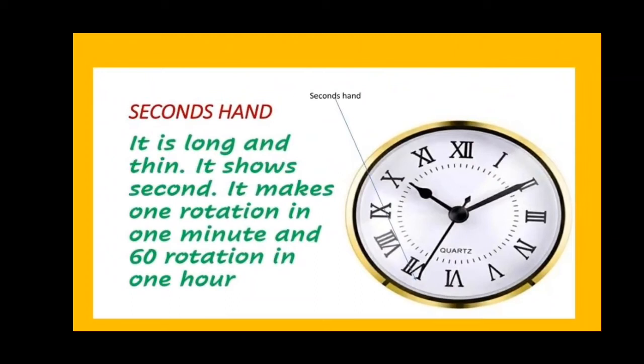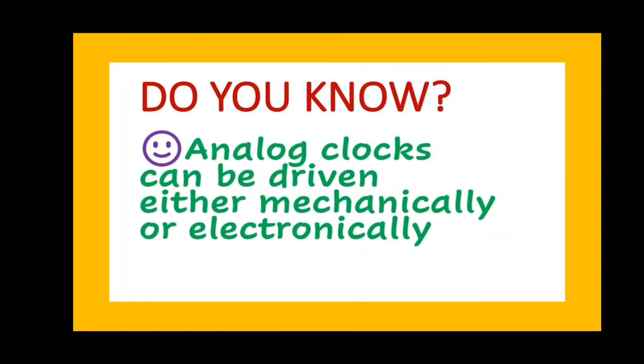Next, at last is the seconds hand. It is long and very thin and shows seconds. It makes one rotation in one minute and 60 rotations in one hour. Do you know children, analog clocks can be mechanical or electronic? That is, they can be driven mechanically using a crown or electrically using a battery.